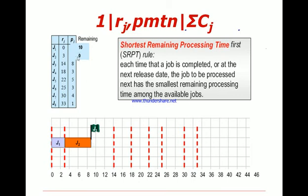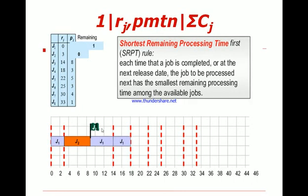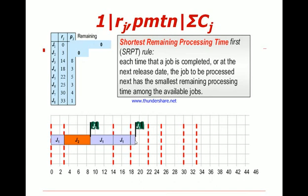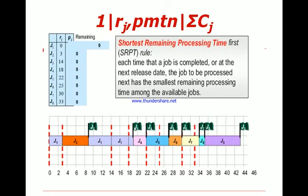When Job 2 is finished, the least remaining processing time belongs to Jobs 3 and 4 at 18, so we go back to Job 1 at time 14 — remaining time is 5. Job 3 starts at 14 but has a processing time of 8, so we continue with Job 1 until time 18, finishing it with 1 remaining. Then we move to Job 4, and we continue the same way for all jobs until the end. This is the Shortest Remaining Processing Time sequence.